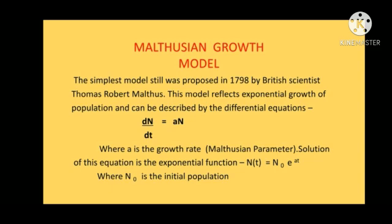Malthusian Growth Model. The simplest model still was proposed in 1798 by British scientist Thomas Robert Malthus. This model reflects exponential growth of population and can be described by the differential equation dN/dt equals a times N, where a is the growth rate Malthusian parameter.